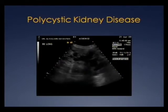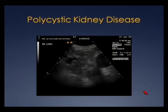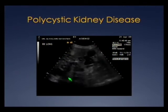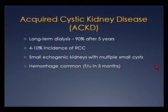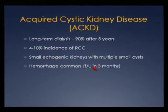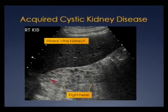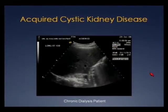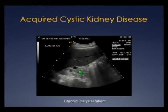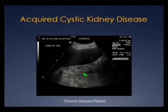In acquired cystic kidney disease, the kidneys are often very difficult to see — hiding in the background of fat. The cine images may help you better identify the kidney and the cysts within it.